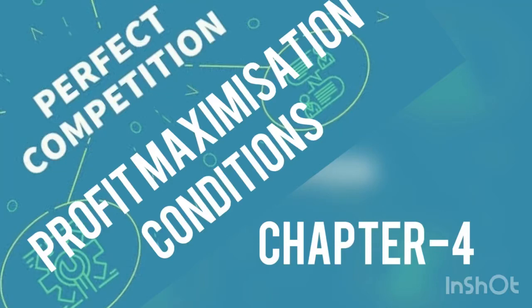Hi, dear friends. Welcome back to ECE Commerce Concepts. All of you are here to be aware of the topic of economics. The 4th chapter of Microeconomics is the theory of the firm under perfect competition. In this chapter, there is an important area: profit maximization conditions of a perfect competition.